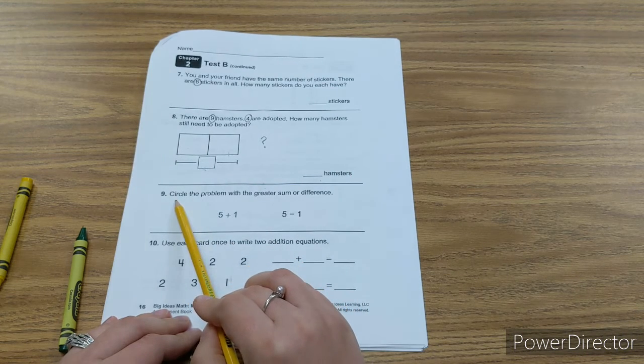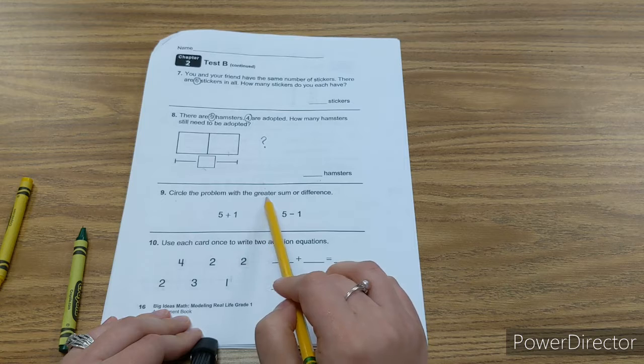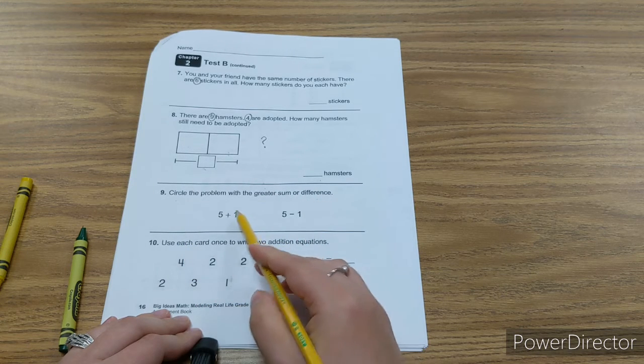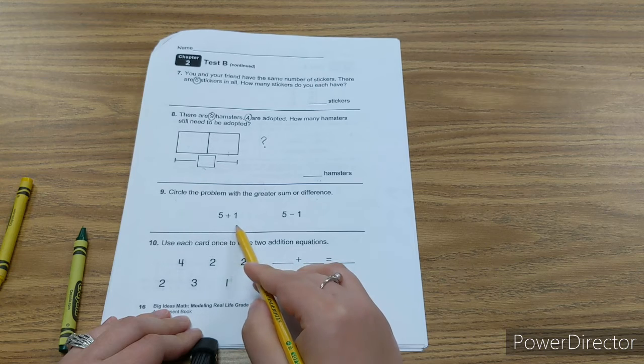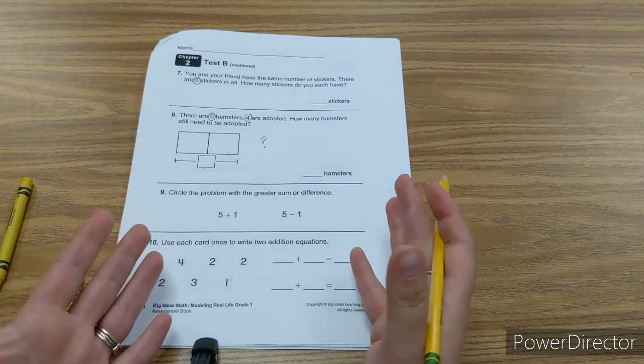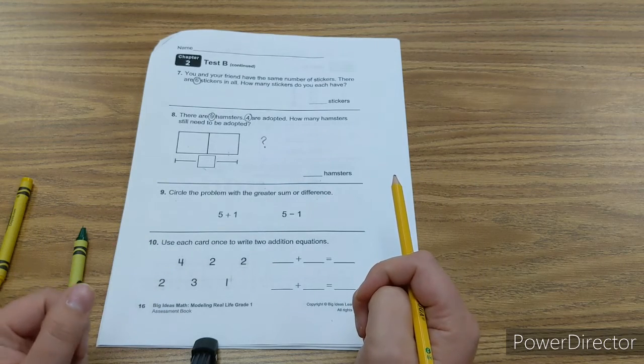Number nine, circle the problem with a greater sum or difference. So after you do five plus one and five minus one, which one is greater? Circle that problem.